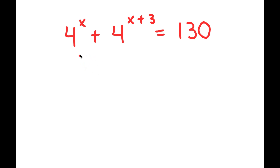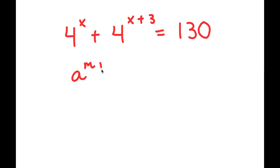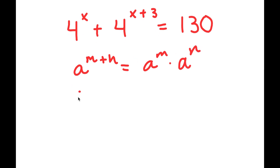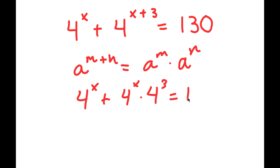So in this problem, I have 4 to the power of x plus 4 to the power of x plus 3 is equal to 130. To solve this, I'll use the rule that a to the power of m plus n equals a to the power of m times a to the power of n. So 4 to the power of x plus 3 equals 4 to the power of x times 4 to the power of 3, giving us the equation equal to 130.